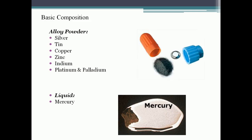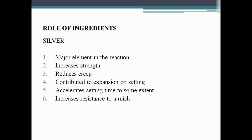Now moving on to the basic composition of amalgam. The alloy contains a powder and a liquid. The powder contains silver, tin, copper, zinc, indium, platinum, and palladium. The liquid contains mercury. We will now discuss the role of each ingredient one by one, starting with silver.